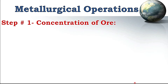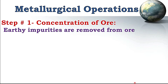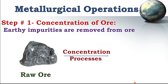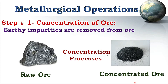There are three major processes involved in the extraction of any metal. The first step is known as concentration of ore, where mainly the earthy impurities are removed from the ore. Before this process we have raw ore from the earth's surface, and through different concentration processes this raw ore is converted into concentrated ore — a purer form — because all the earthy impurities are removed.